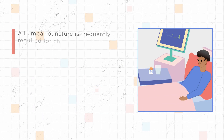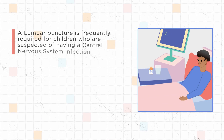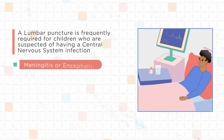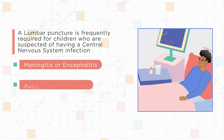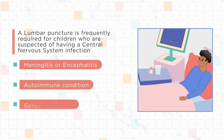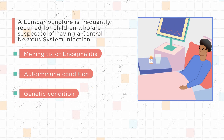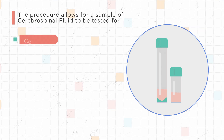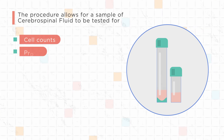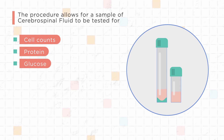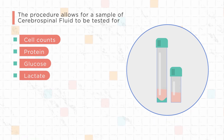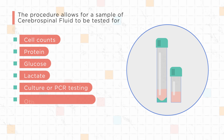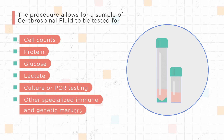A lumbar puncture is frequently required for children suspected of having a central nervous system infection such as meningitis or encephalitis, an autoimmune condition, or a genetic condition. The procedure allows for a sample of cerebrospinal fluid to be tested for cell counts, protein, glucose, lactate, culture or PCR testing, or other specialized immune and genetic markers.